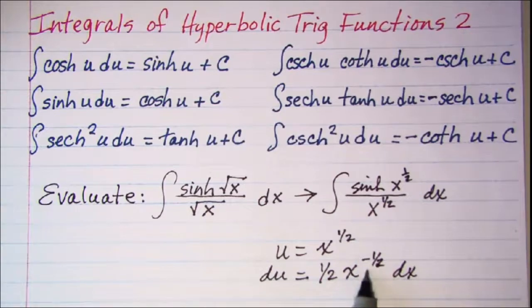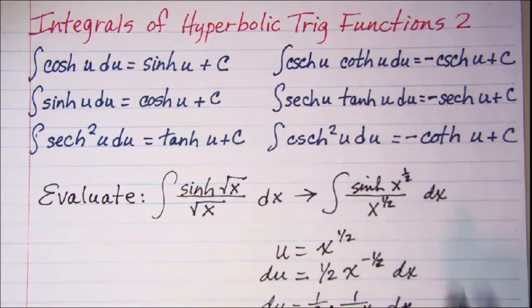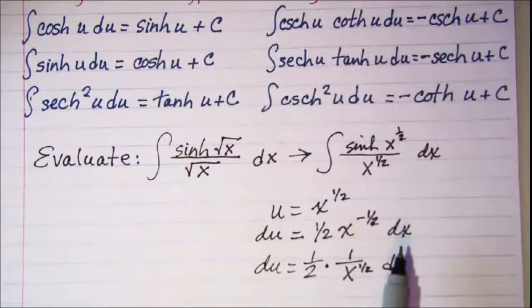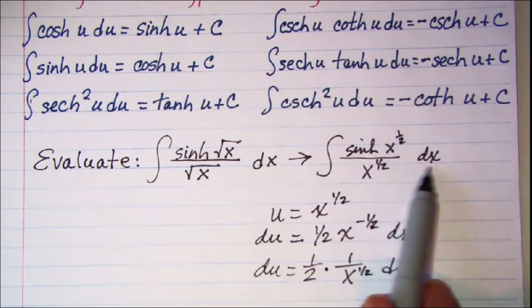Now this x to the negative one-half is the same as one over x to the one-half. So I can see that this factor and my dx factor are both included in my problem.